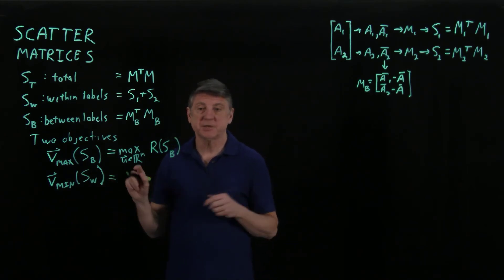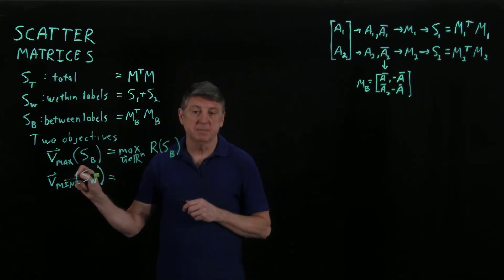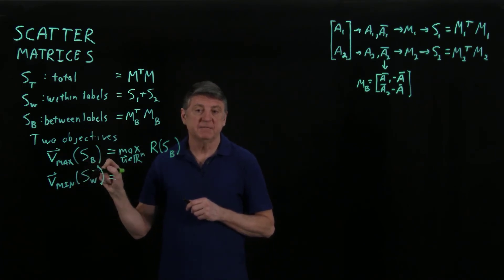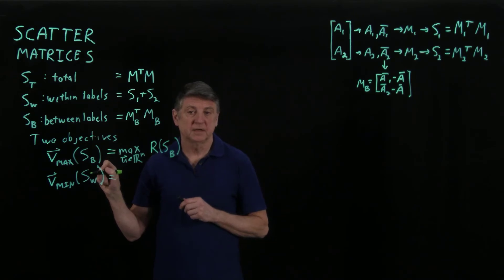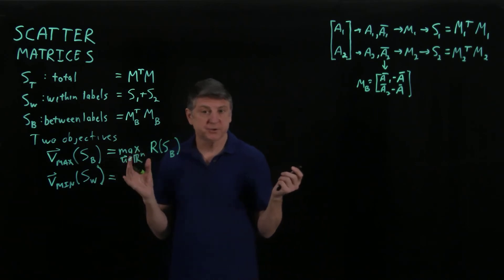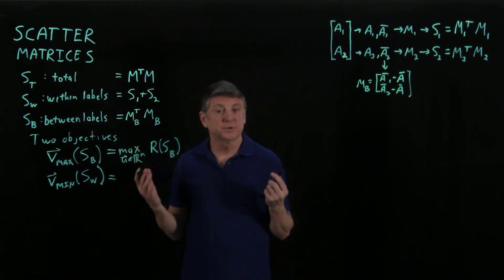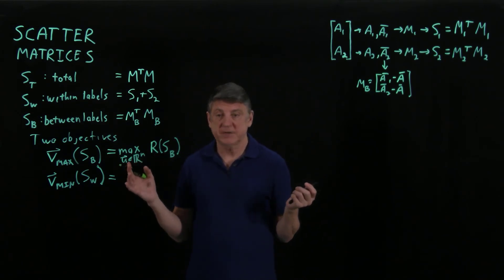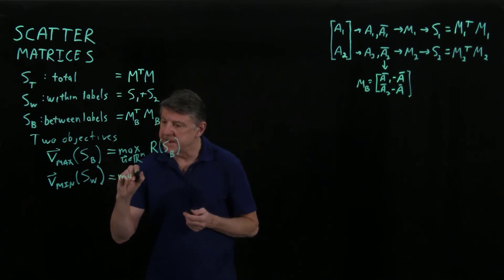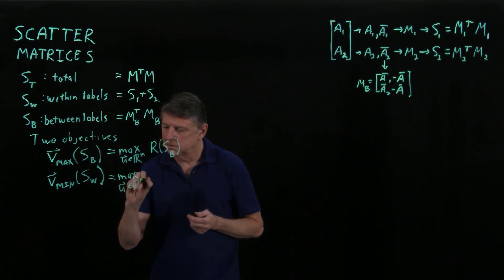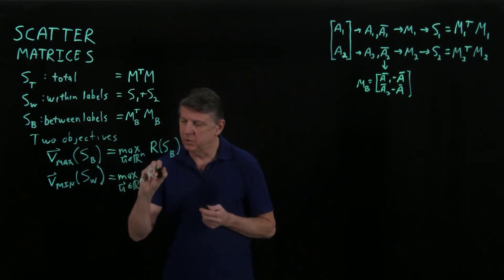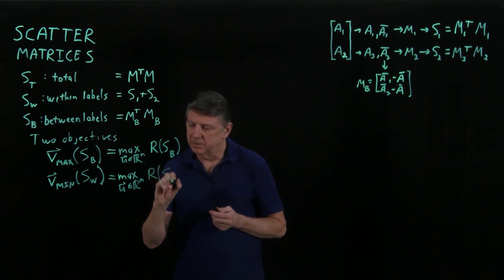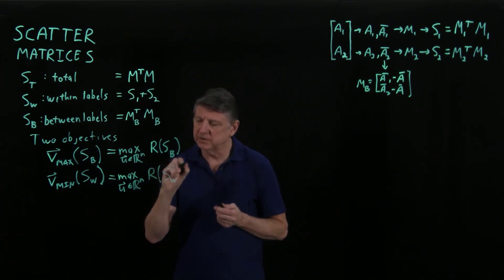And likewise, we want to form it as a maximization. So if we minimize the eigenvector of within label scatter, that's the same as maximizing the inverse. Now that assumes that SW inverse exists. We'll assume that it does. There are numerical methods we can use if that happens to be a singular matrix. So that is the maximum over all possible vectors of the Rayleigh quotient, and we'll take the within label scatter and invert that matrix.